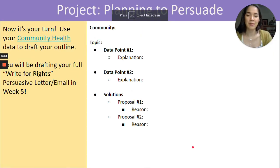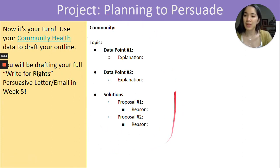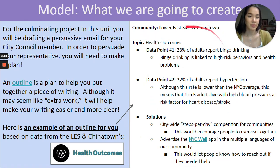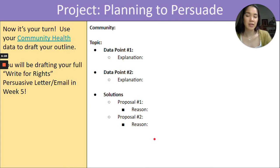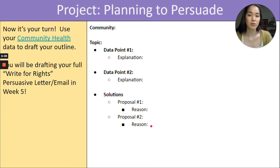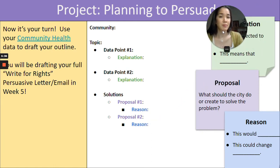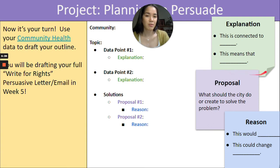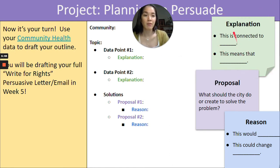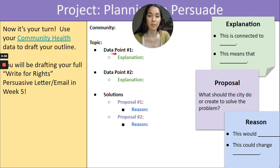Finally, you have the project page, which contains the outline students will complete to prepare for their persuasive letter or email. The model is shown again here. One possible scaffold and differentiation point is to include sentence starters for the different components of the outline. For example, if students see a prompt asking for an explanation and aren't sure what's meant, you can have something ready showing how they can begin to express their explanation of the data, since the explanations correspond to the different data points.